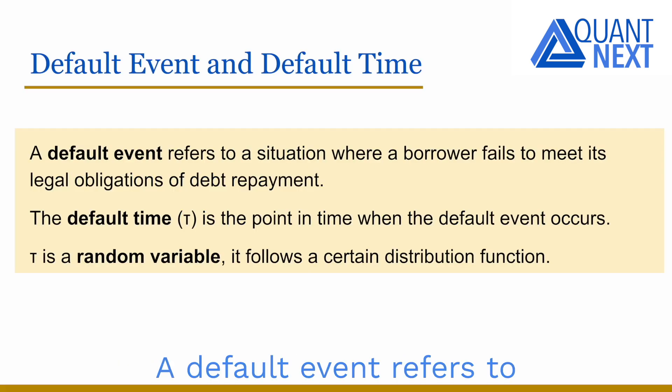A default event refers to a situation where a borrower fails to meet its legal obligations of debt repayment. The default time tau is the point in time when the default event occurs. It is a random variable following a certain distribution function.